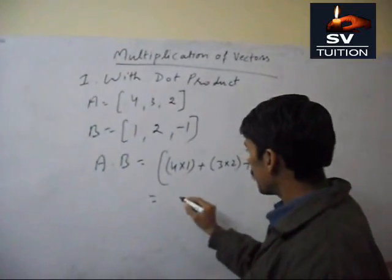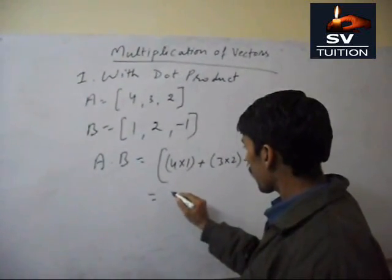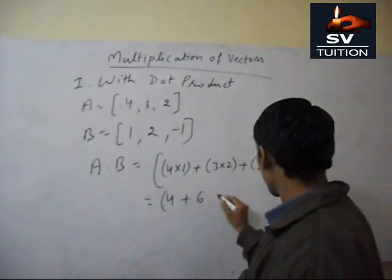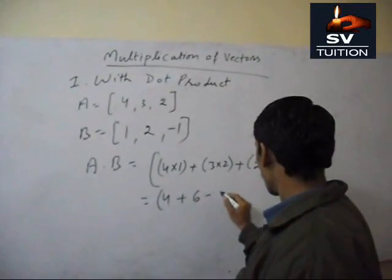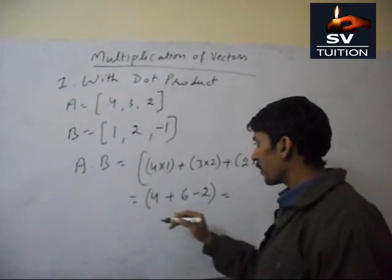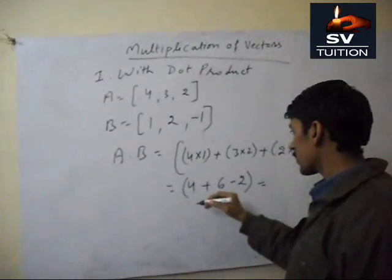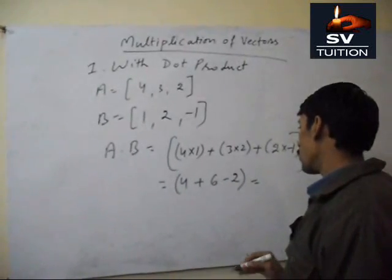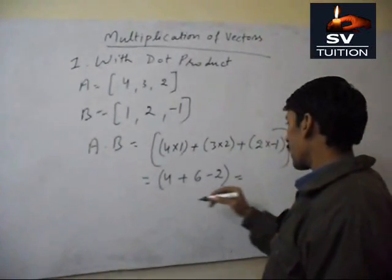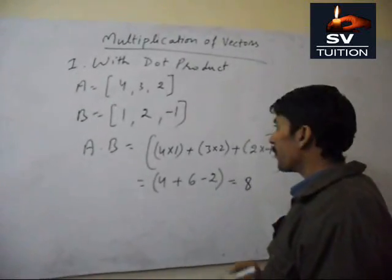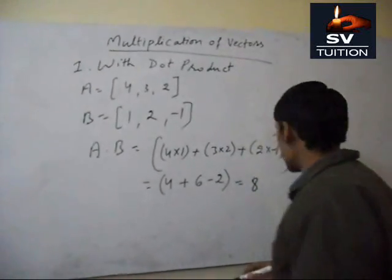And the answer of this product is 4, 6, and 2. And its product will be 4, 6, 10 minus 2. 10 minus 2 is 8. This is the first method.